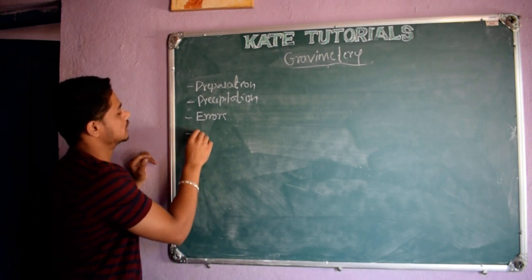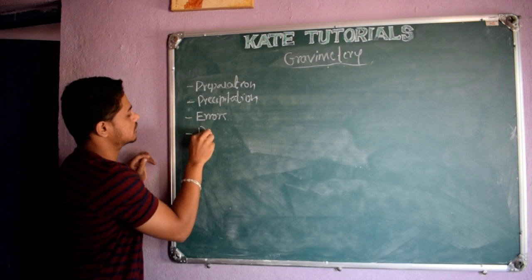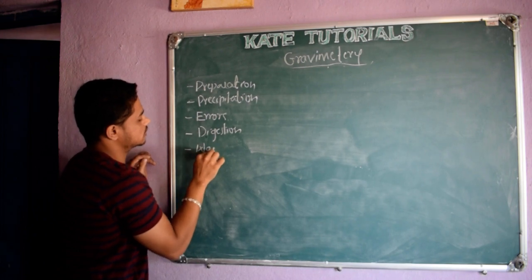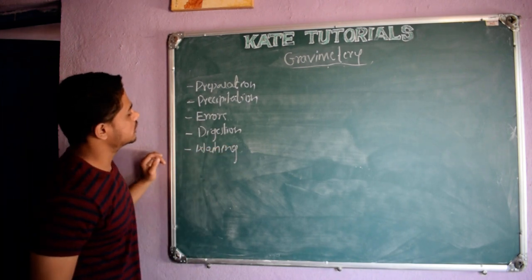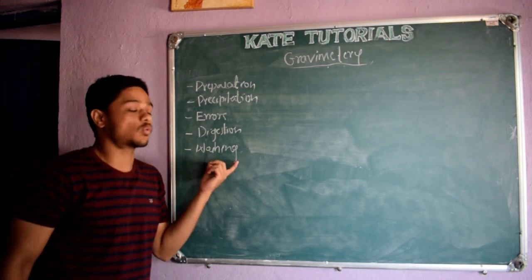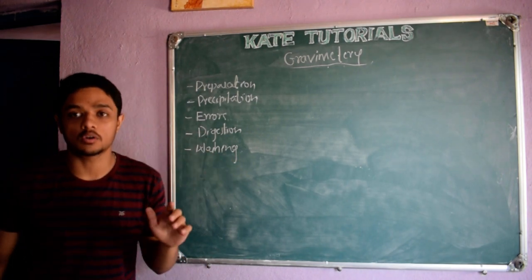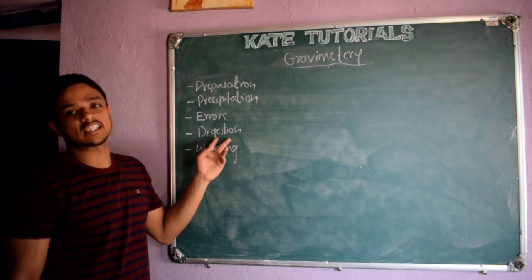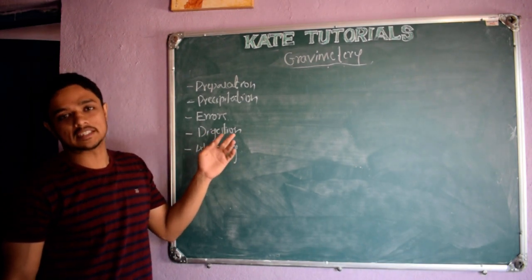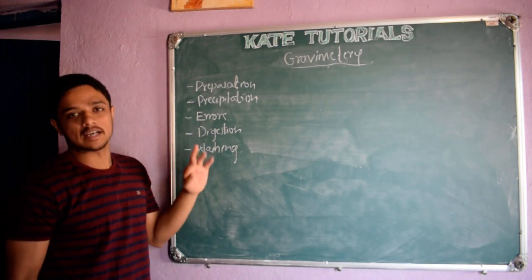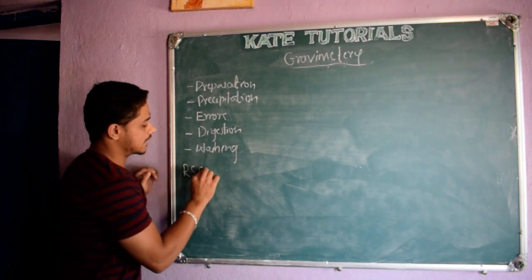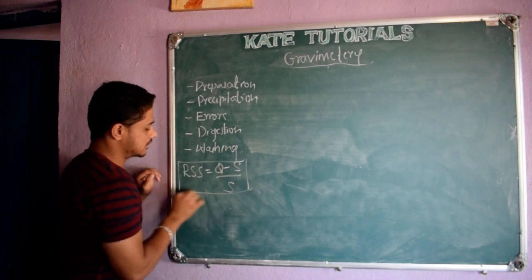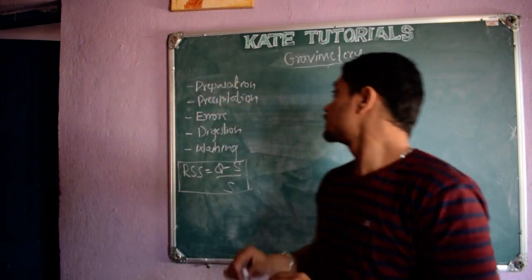We also discussed digestion and washing of the precipitate, including how to select the washing liquid and what happens if you choose the wrong one. We discussed how digestion helps keep Q value less and S value more, so the RSS value will be less. RSS equals Q minus S divided by S — this formula is very important.